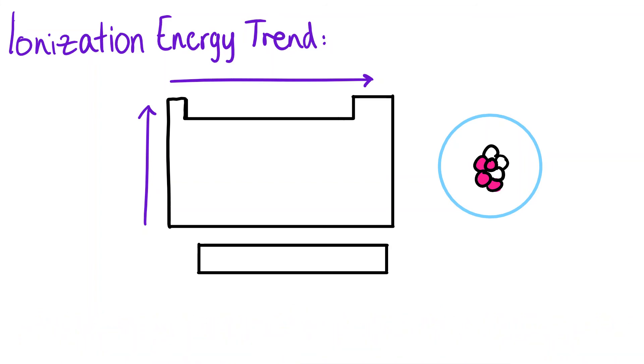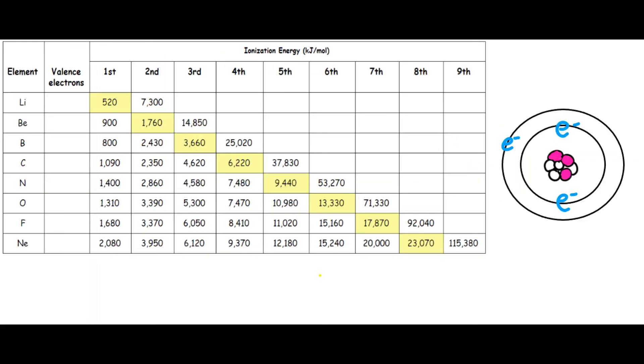You should see a big increase in ionization energy after all the valence electrons are removed because it takes significantly more energy to remove electrons from a stable configuration. We can use this knowledge to predict the number of valence electrons of an element.